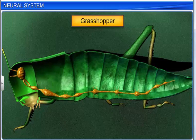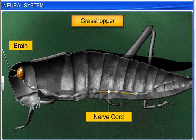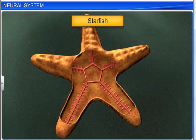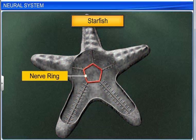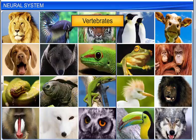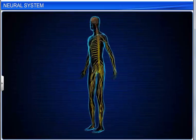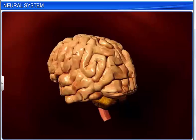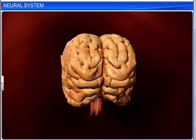Insects have a better organized neural system. Starfish do not have a brain, and its nerves are radially organized with a connecting ring in the center. All vertebrates have a well-developed neural system. However, the brain is the most complex and advanced in the primates, especially in human beings.